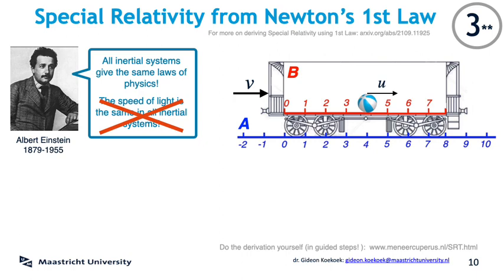We will take a ball and have it move about with some velocity U. We will simply ask: if we know the distance traveled by the ball in the A system, can we calculate what the distance is as seen in the B system? And if we know how many seconds that took in the A system, can we calculate how many seconds it took in the B system? That is, what is the formula for delta x and delta t in the B system given delta x and delta t of the ball in the A system?